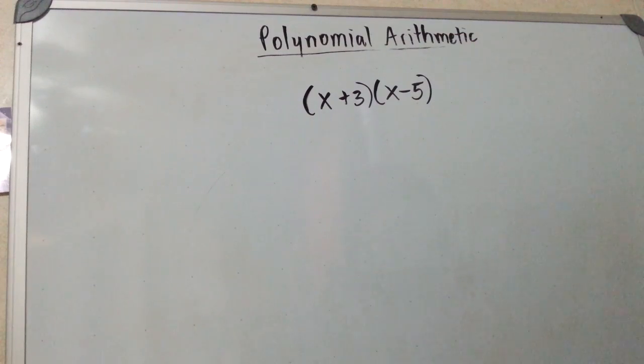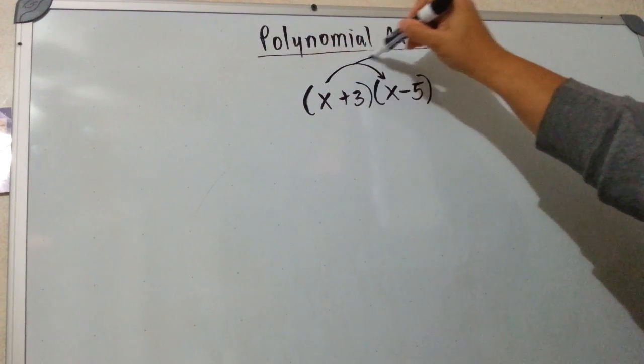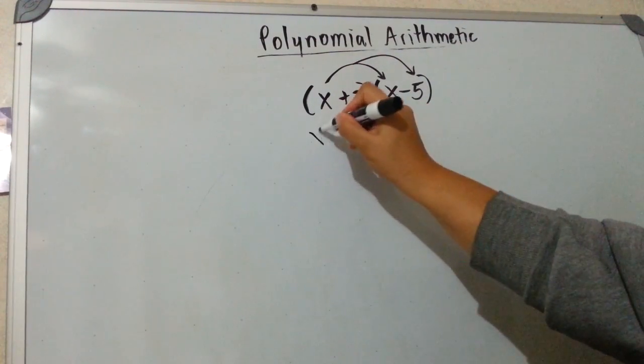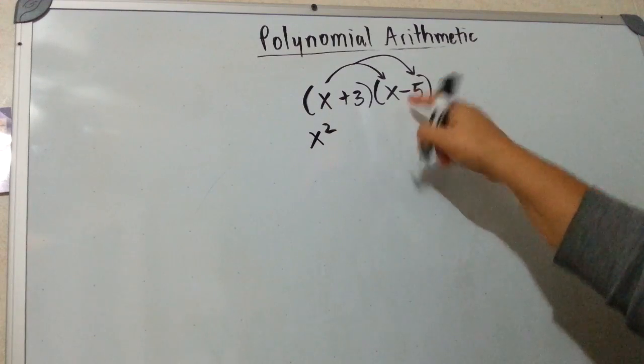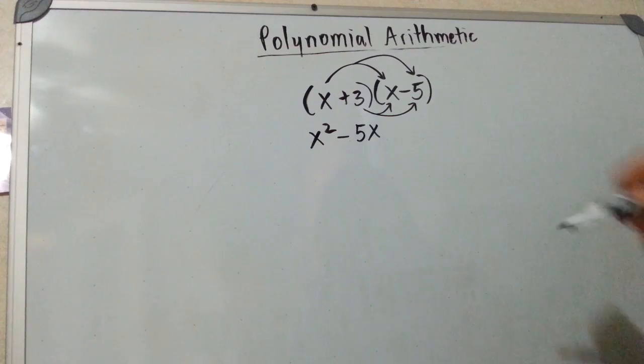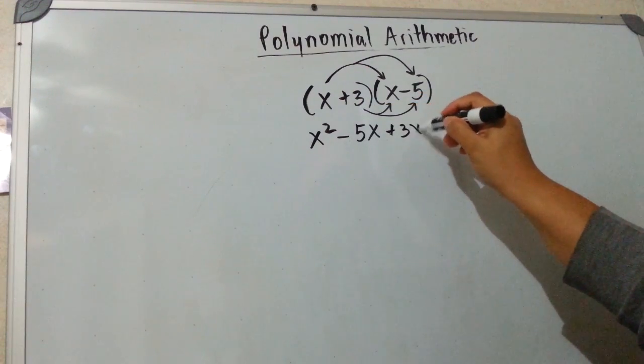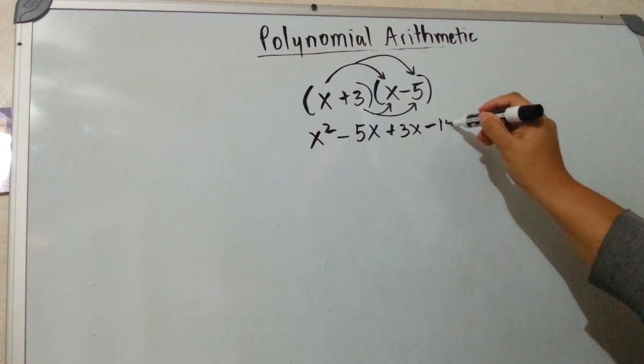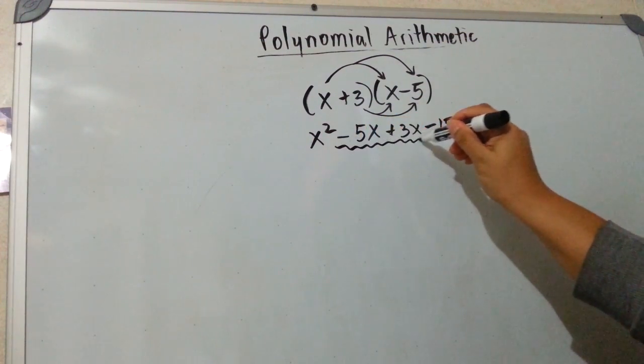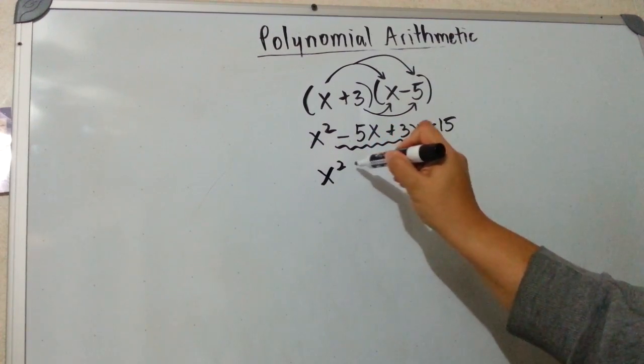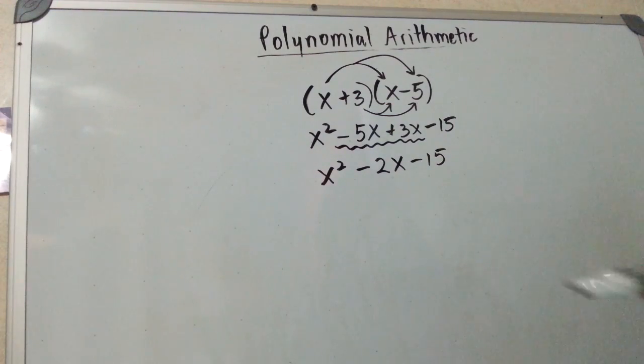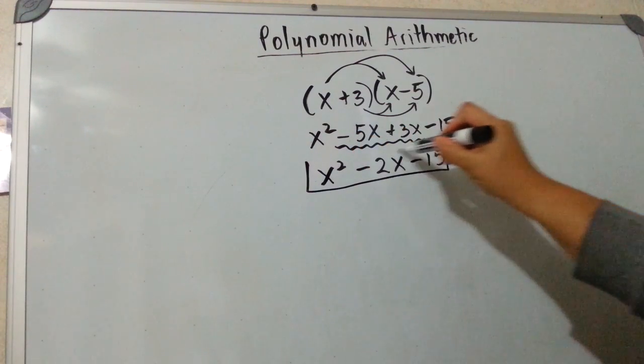This is binomial times binomial, and essentially you're foiling. You've got to first distribute the x into these two terms. So x times x is x squared. x times negative 5 is minus 5x. And then you have to distribute the 3 into those two terms. 3 times x. 3 times negative 5. And then you have to check, do I have any like terms? Yes. This one and this one are like terms. And so you will get minus 2x minus 15, because minus 5 plus 3 is negative 2. And that would be your answer.